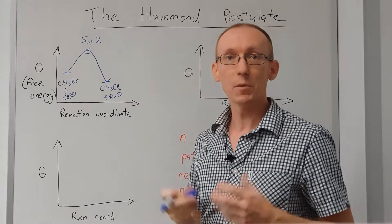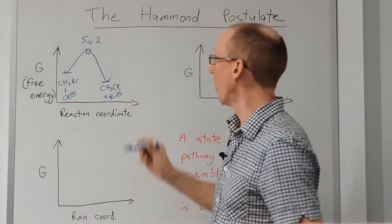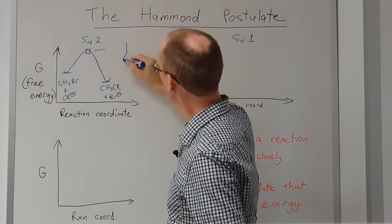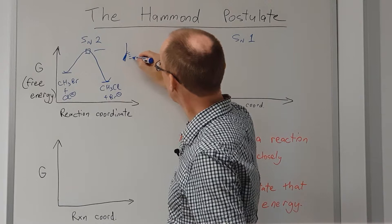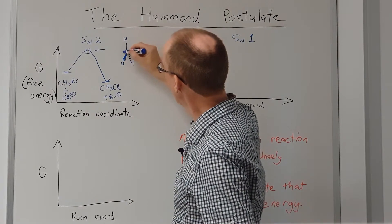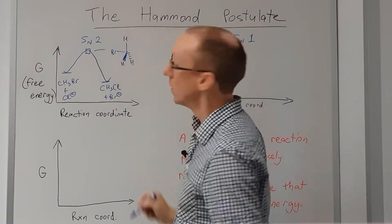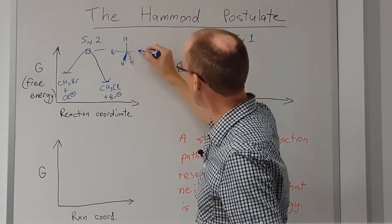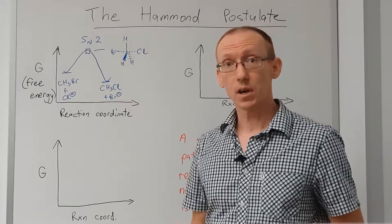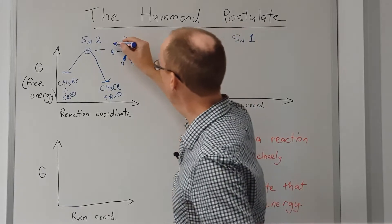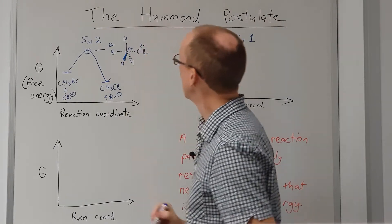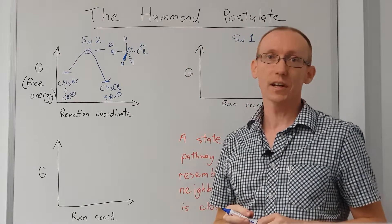If you've learned about SN2 reactions in the past, you'll know what that kind of structure looks like. We've got a central carbon atom where we've got a breaking carbon-bromine bond and a forming carbon-chlorine bond. If we want to be as precise as possible, we'll put in some partial charges. That's what the transition state for an SN2 reaction looks like.